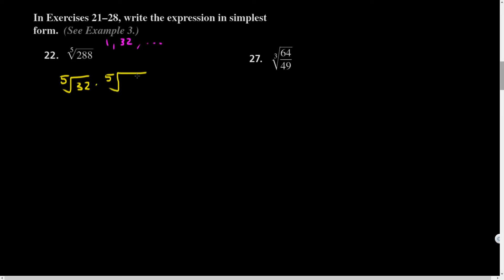Let's see. 32 goes into that nine times. How did I do that? With a calculator. I did 288 divided by 32. I got nine. And the fifth root of 32 is two because two to the fifth is 32. And so this is the same as two times the fifth root of nine done.